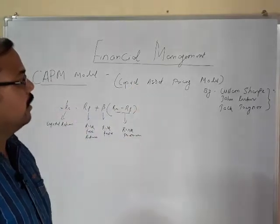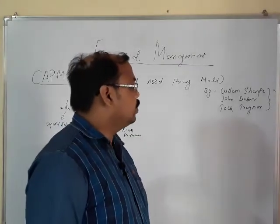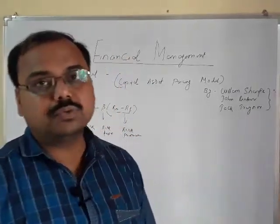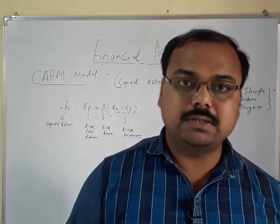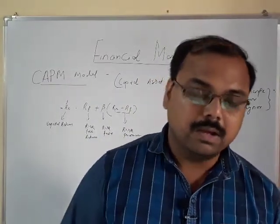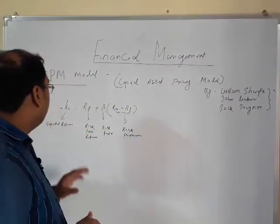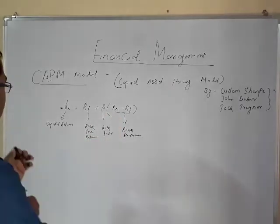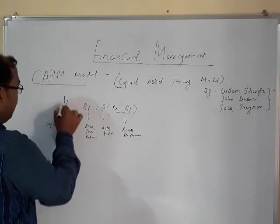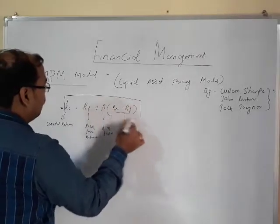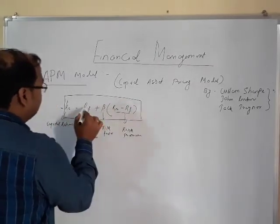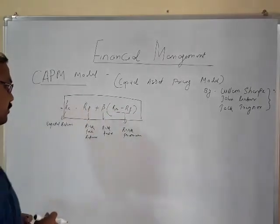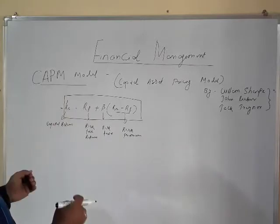The Capital Asset Pricing Model was provided by Mr. William Sharpe, John Lintner, and Jack Treynor. These three persons came together to establish this model. Under this model, the formula is: Ke = Rf + β(Rm − Rf). Let's try to understand what each of these factors represents.